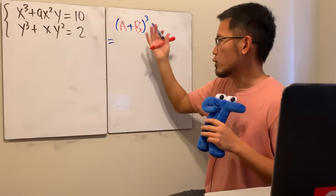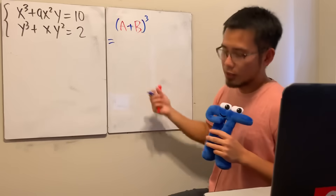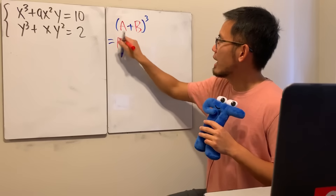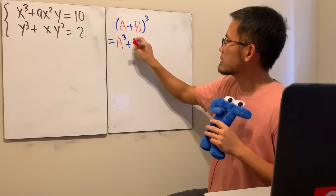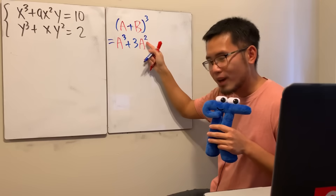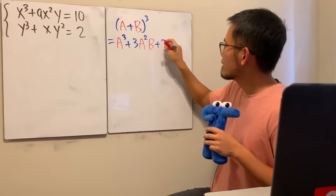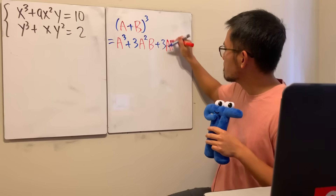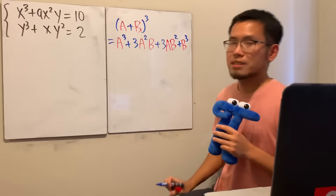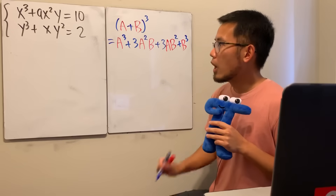We can use the binomial theorem, Pascal's triangle, or just multiply it out. We'll end up with a³ + 3a²b + 3ab² + b³. You can see that the powers do match — however, here we have nine but the coefficient in the expansion is three.